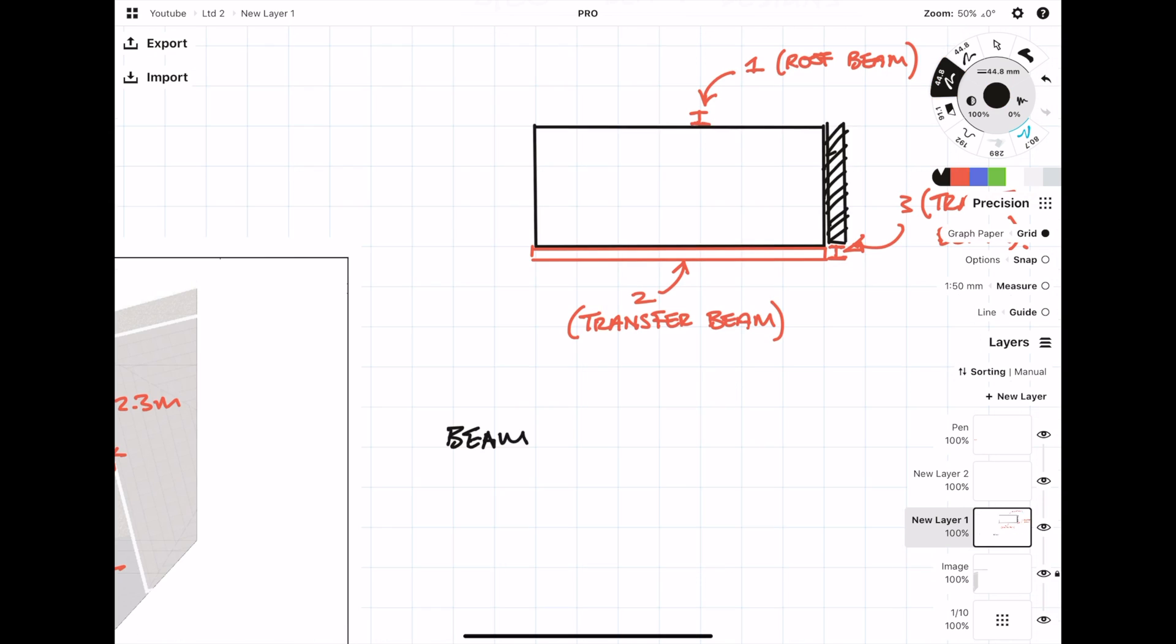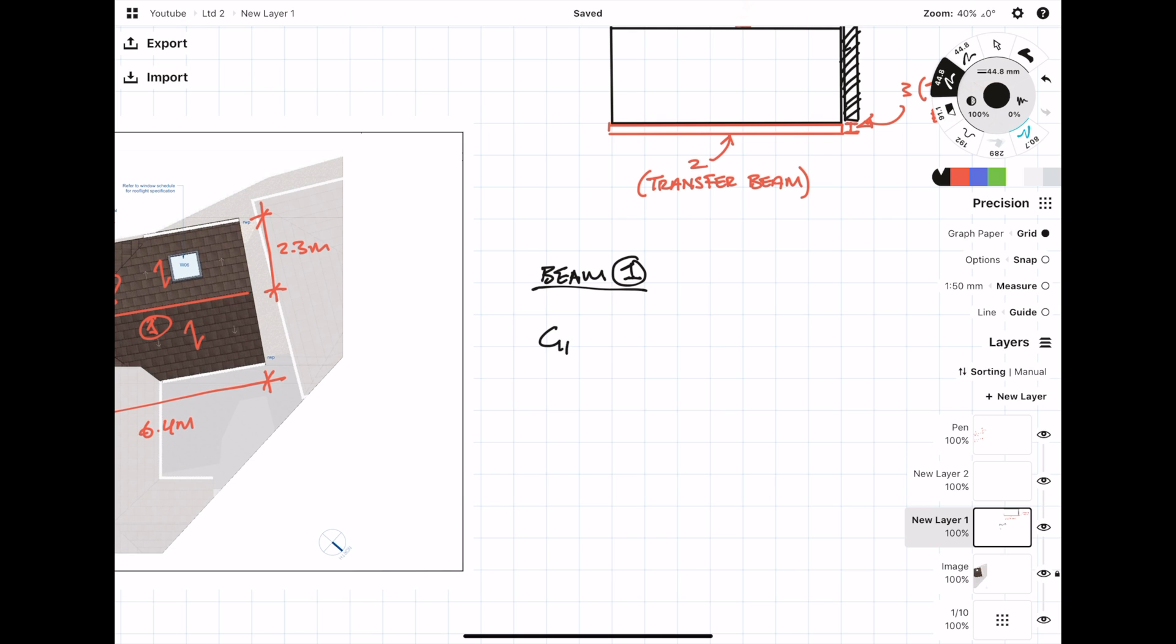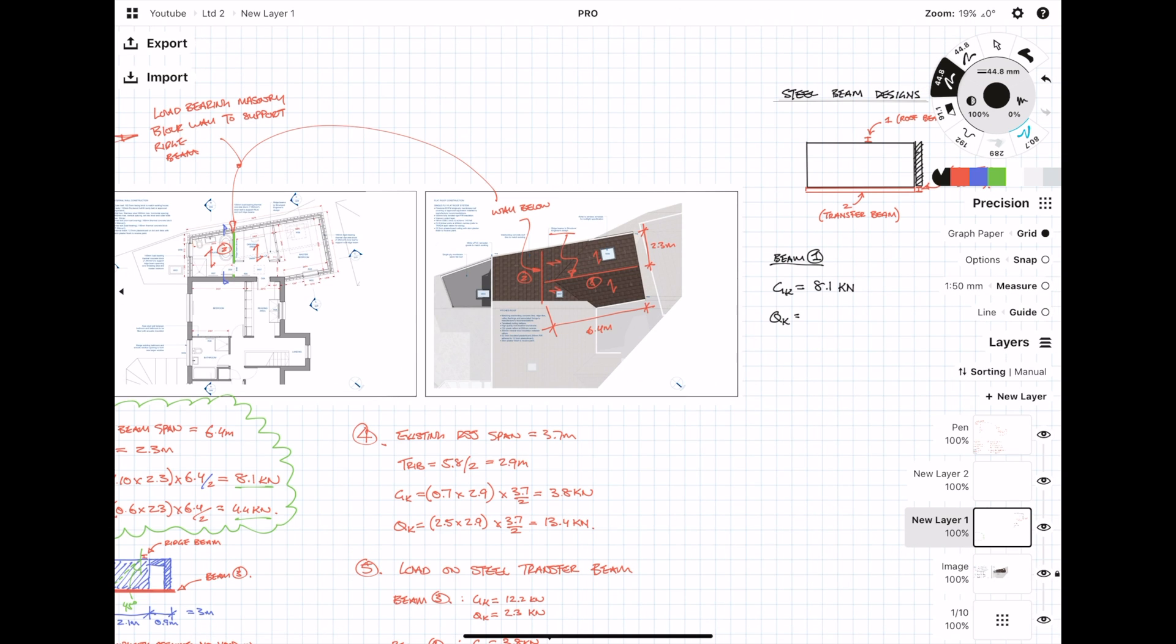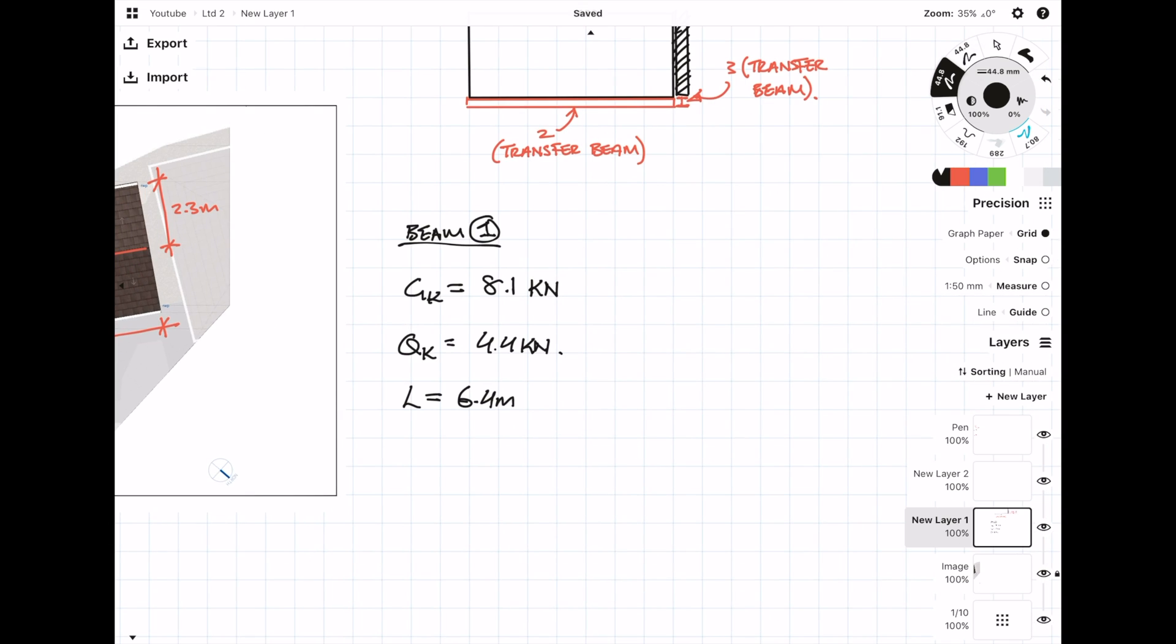Starting off the design with beam one, this is a simply supported beam with a UDL. We did the load takedown in the previous video, so we can use those loads to design the beam. I'm going to go over the design fairly quickly and briefly, but if you want a more detailed design example please check out my other video—I'll leave a link in the description below. Using the reaction forces from the load takedown, we can work out the bending moments by simply multiplying by the length and dividing by four.